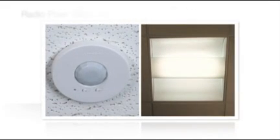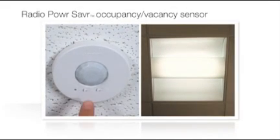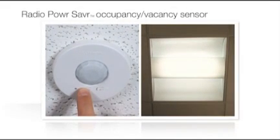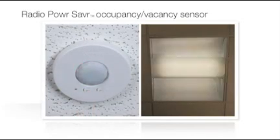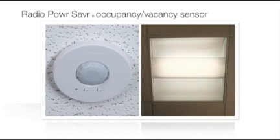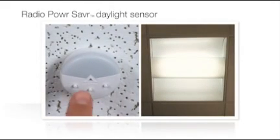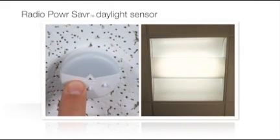Third, hold the Light Bulb button on each Radio Power Saver Occupancy Sensor for 6 seconds. Fourth, hold the Link button on each Radio Power Saver Daylight Sensor for 6 seconds.